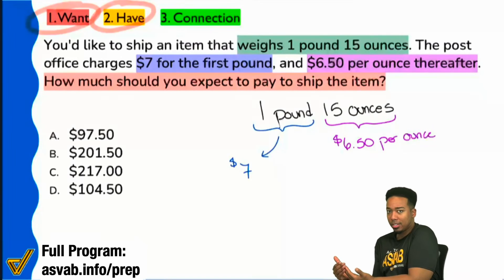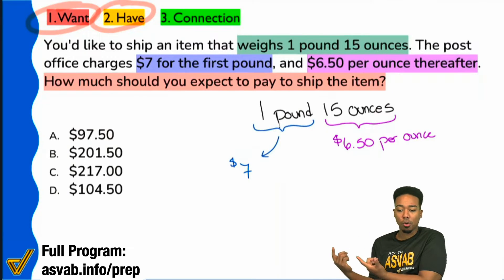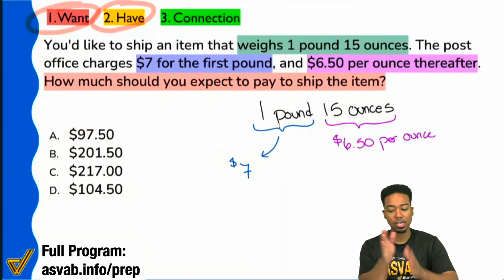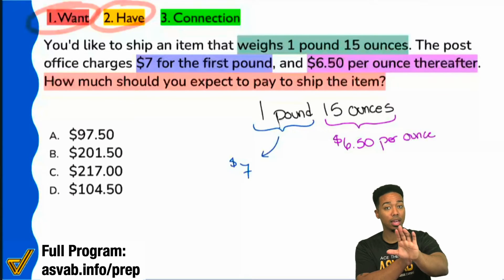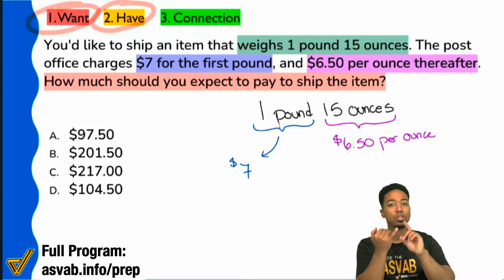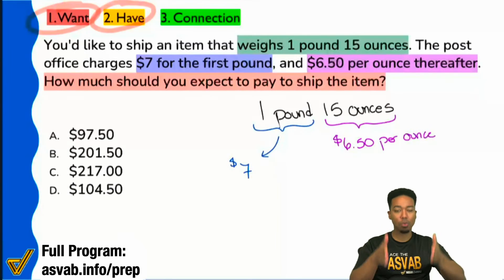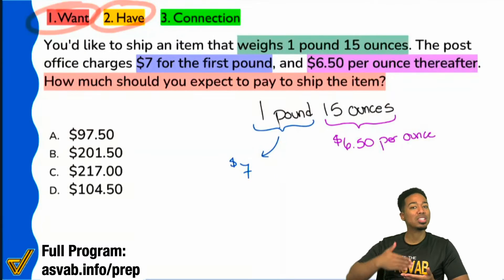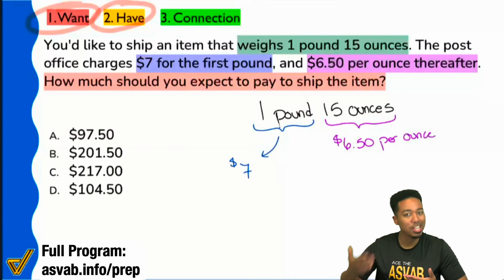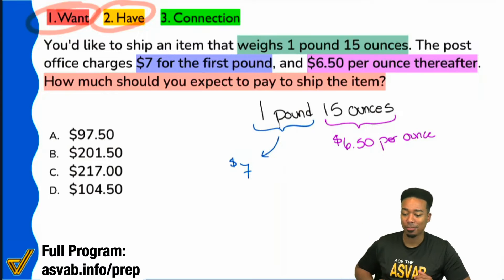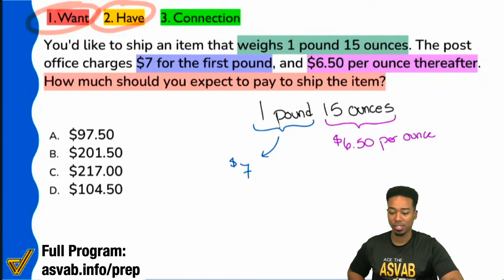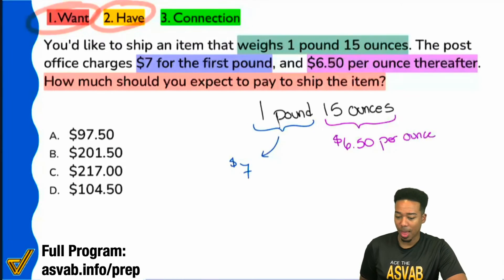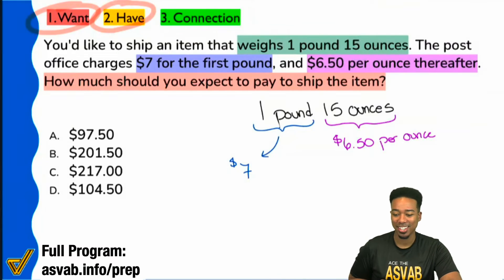Everything after the fact, $6.50. So, my party people, does that make sense at least to you? Again, the $7, you pay that for the first pound. Only one pound. That entire one pound, $7. Whatever you have left, that's where the additional charge comes in. That's where that $6.50 per ounce comes in. So, let me know, my party people, if that makes a little more sense, if that gave you some clarification in that regard.